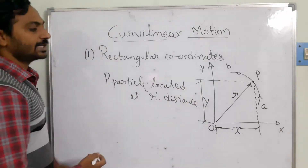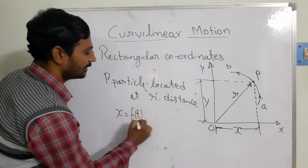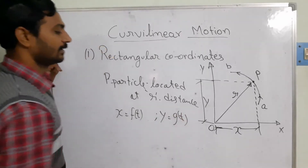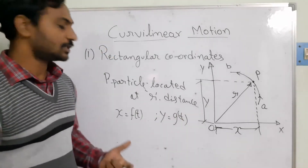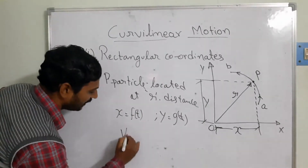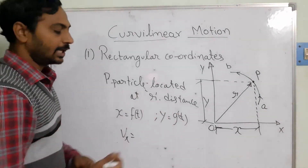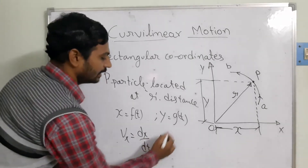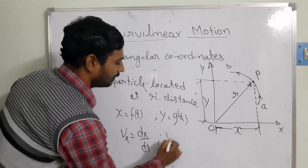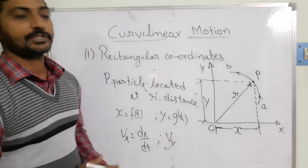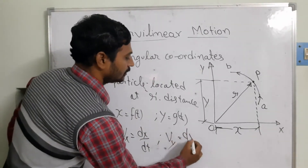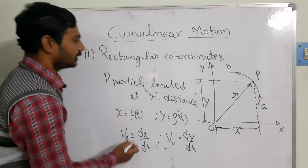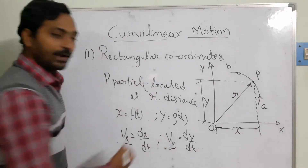Using rectangular coordinates: x is a function of time, and similarly y is a function of time. Taking the derivative, the velocity in the horizontal direction is vx = dx/dt, and the velocity in the y direction is vy = dy/dt. By using these rectangular coordinates we have determined the velocity in the x direction and the y direction.